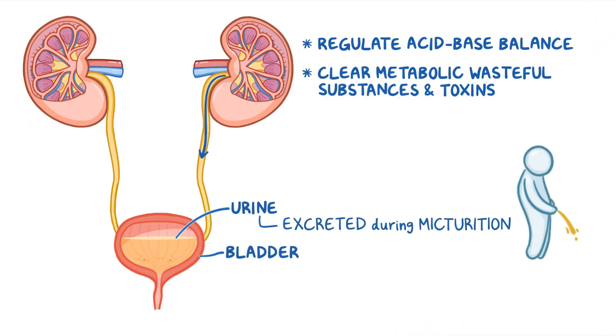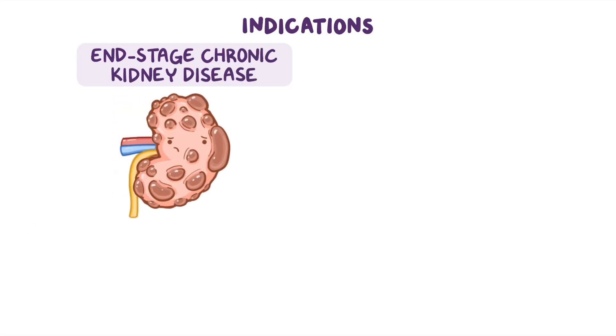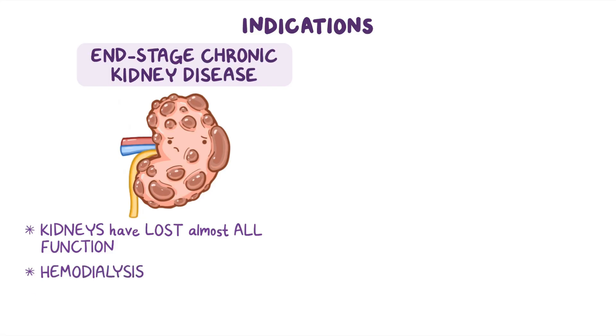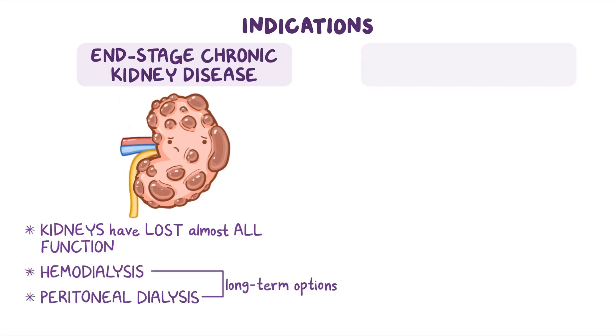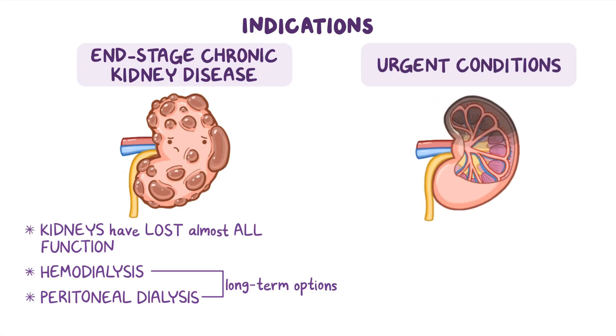Now let's look at some situations when dialysis is indicated. Most often, clients who require dialysis have end-stage chronic kidney disease, which means the kidneys have lost almost all their function. In this case, both hemodialysis and peritoneal dialysis are adequate long-term options. However, there are some urgent conditions that benefit from dialysis, and hemodialysis is usually preferred in these situations.